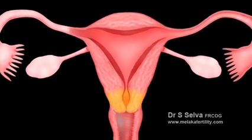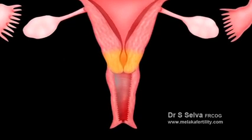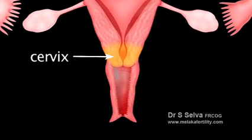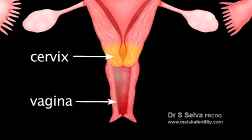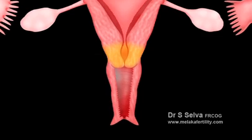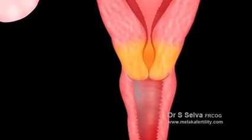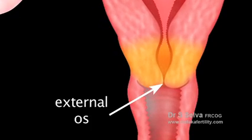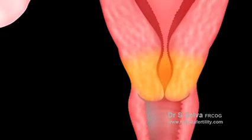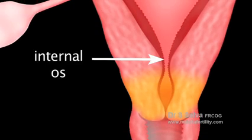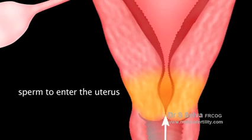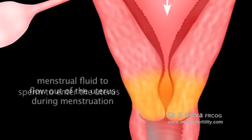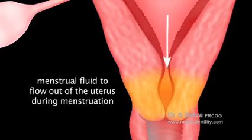The cervix is a lower constricted segment of the uterus that joins the upper part of the vagina. The small cervical opening into the vagina is called the external os, while the one in the uterine cavity is called the internal os. They allow the sperm to enter the uterus during sexual intercourse and the menstrual fluid to flow out of the uterus during menstruation.